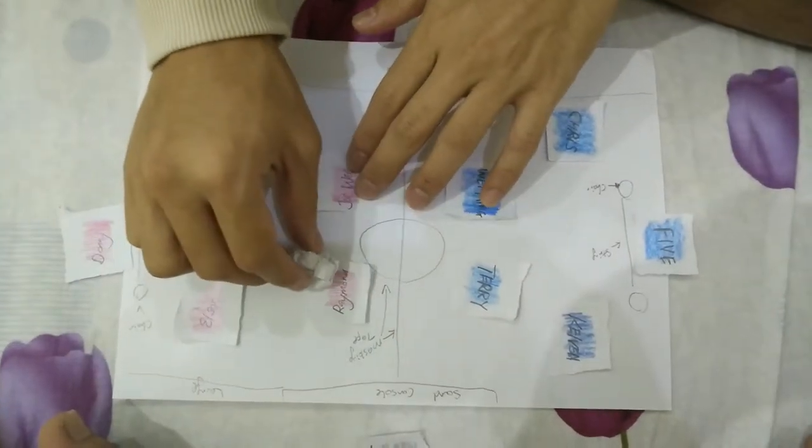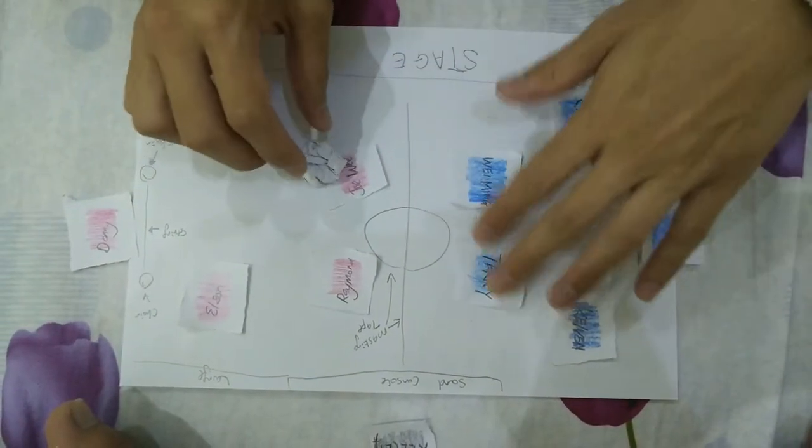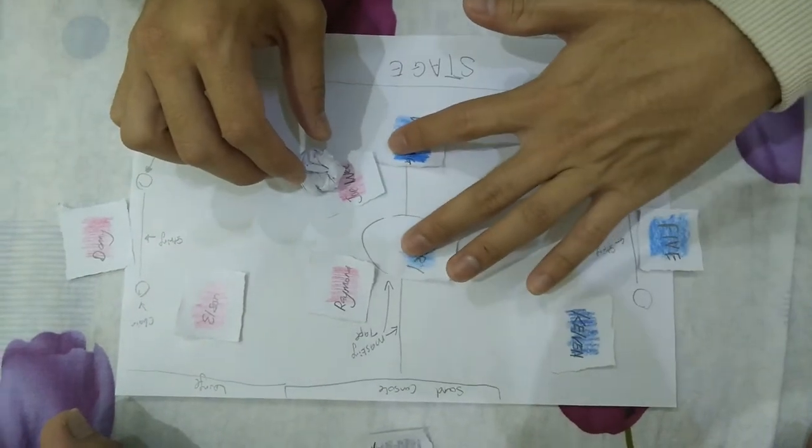All right, so Raymond will first pass the ball to Joey. So when Raymond passes the ball to Joey, that means these two persons have to go now already.